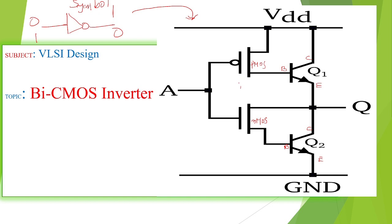We are using both types of transistors, that is the reason it is called BiCMOS. Bipolar technology on one side and MOS technology on the other side — that is CMOS technology, the NMOS and PMOS combination. It is named as CMOS technology, and with the BJT bipolar technology transistors, hence it is named as the BiCMOS inverter.